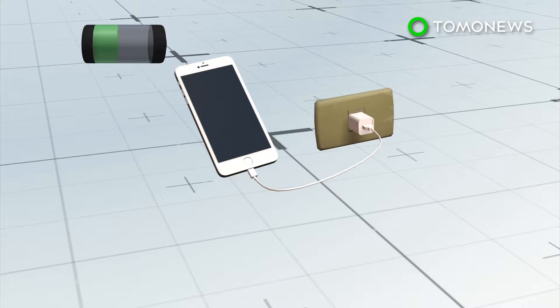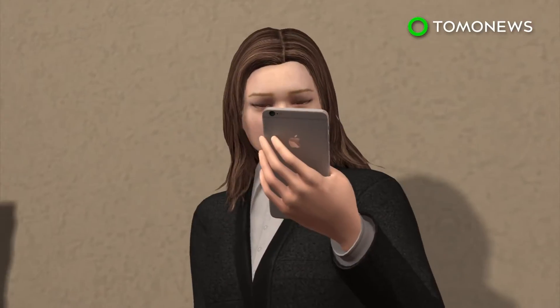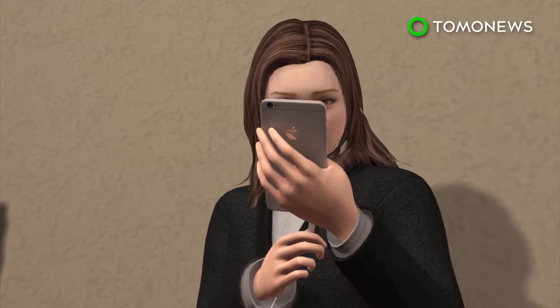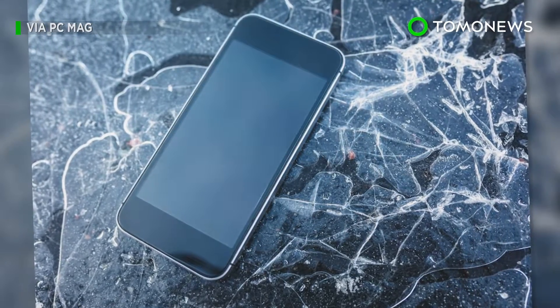Experts recommend charging the phone before it empties completely and not bringing it to a full charge. Plugging it in occasionally throughout the day ensures the battery retains its capacity longer. Batteries also despise both extreme heat and extreme cold, so make sure it's not exposed to either.